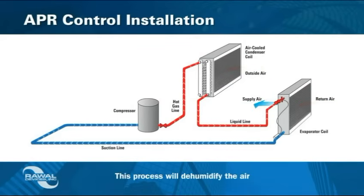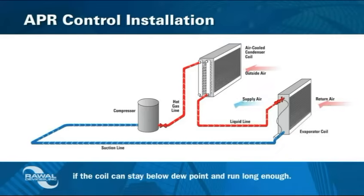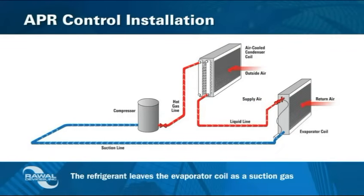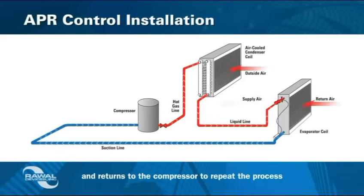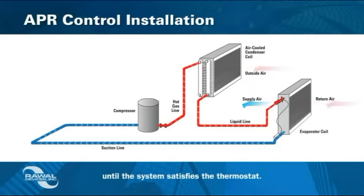This process will dehumidify the air if the coil can stay below dew point and run long enough. The refrigerant leaves the evaporator coil as a suction gas and returns to the compressor to repeat the process until the system satisfies the thermostat.